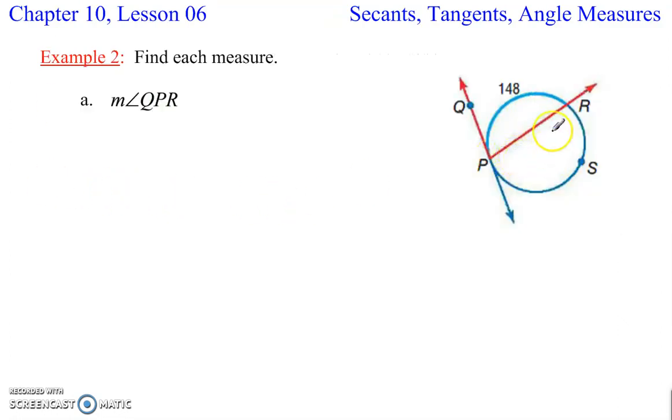Using that, here's an example. We want to find angle QPR. So we're looking for this angle right here. We know that this is 148, so pretty easy. Half of 148, and that gives me 74.